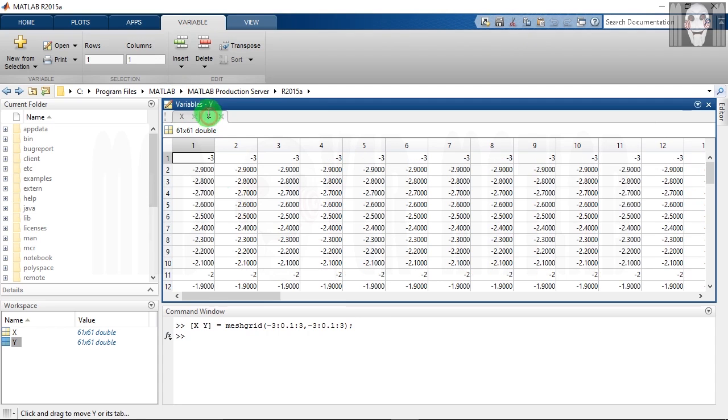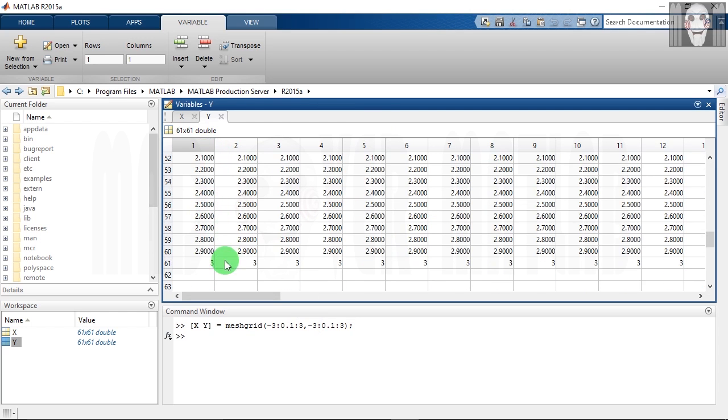And if you see the Y array, it has a kind of transposed appearance as compared to X array. Here each column has the same numbers, and the numbers start from minus 3 and end at plus 3.